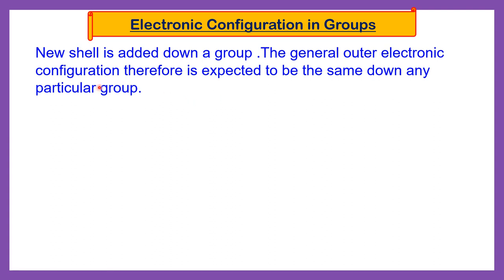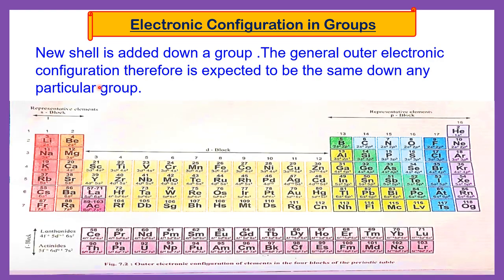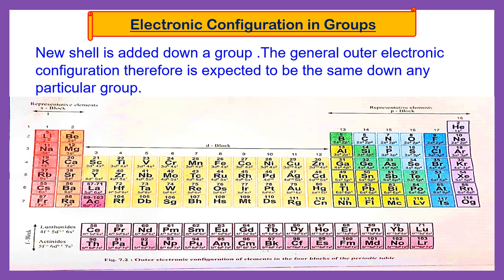For example, group number 1: lithium has outer electronic configuration 2s1. As we move down the group from lithium to sodium, sodium has outer electronic configuration 3s1. Moving further down, potassium is 4s1, then 5s1, 6s1, and 7s1. Only a new shell is added each time.